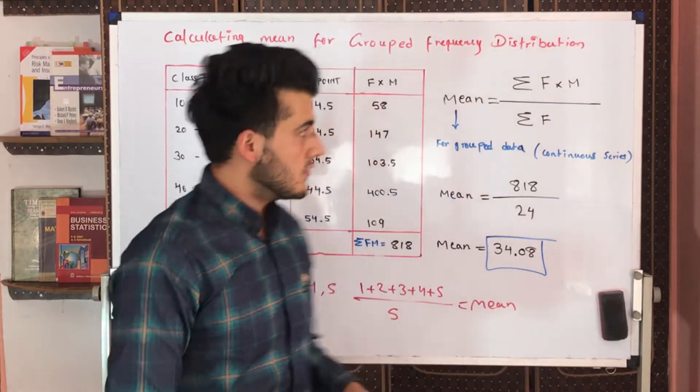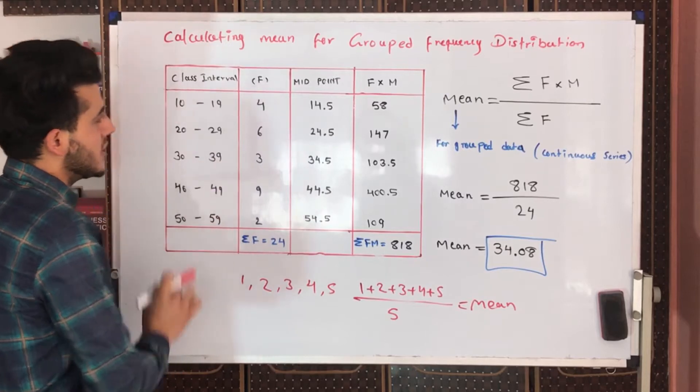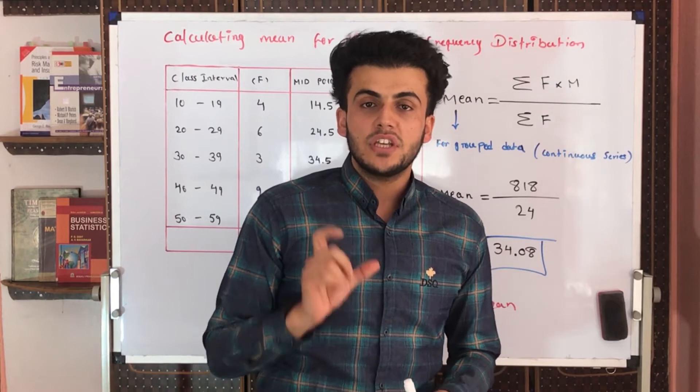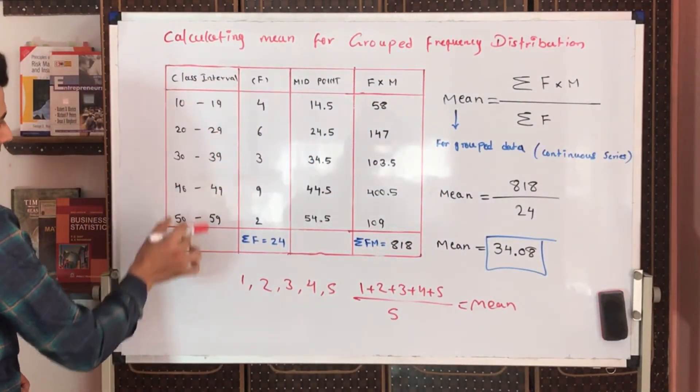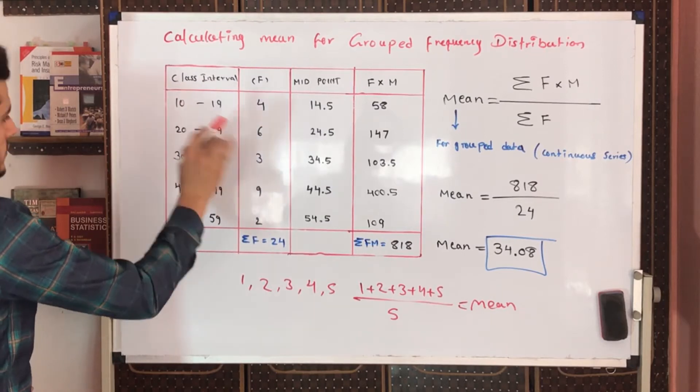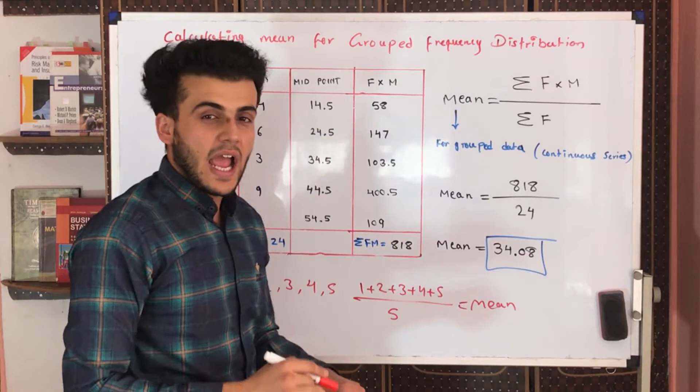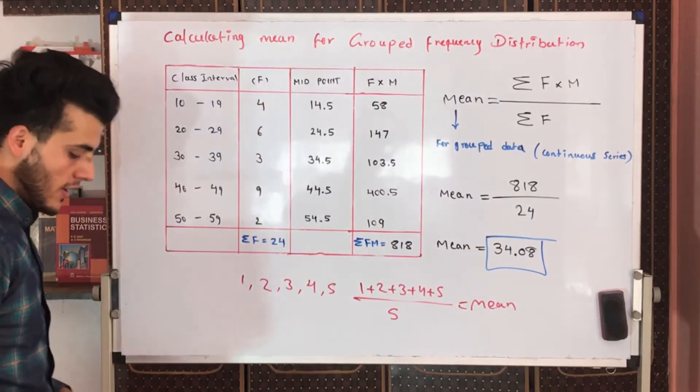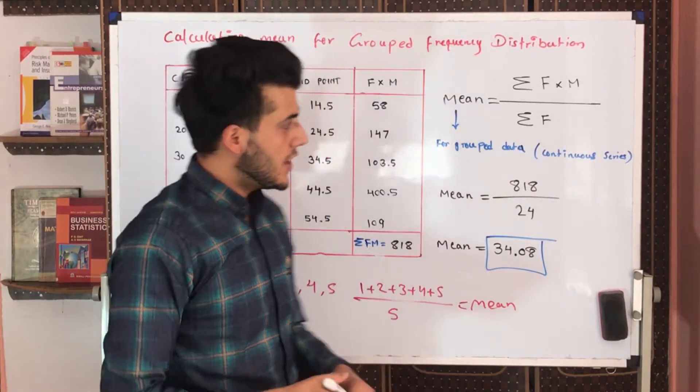But in today's lecture, we have a series of values and we have to find the mean for this type of frequencies. If we have class intervals like this: 10 to 19, 20 to 29, and continuously going on to 59, and we have frequencies as 4, 6, 3, 9, 2, how will we find the mean for this?